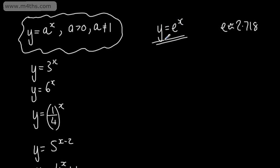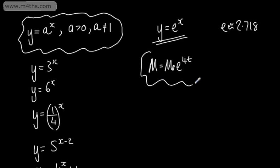We often use exponential functions to model growth and decay. For example, if we had a rock, we could say its mass was equal to its initial mass multiplied by some exponential function, say e^(4t), where t is the time after the first observation. This is an example of how we could use an exponential function to model the mass of a rock.